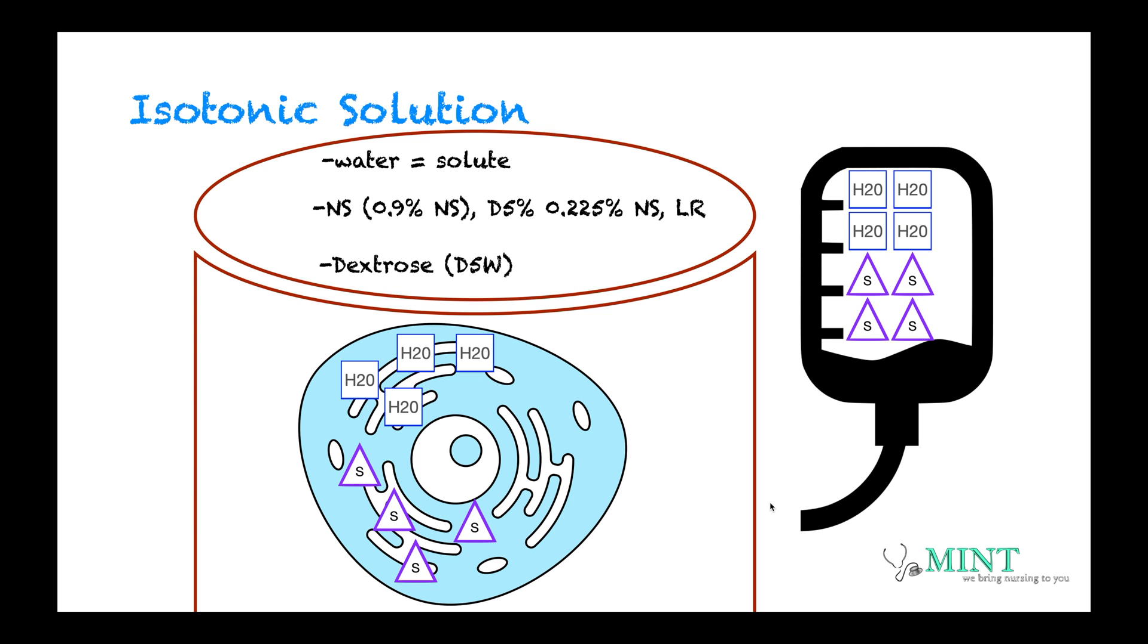So to better understand the different IV fluids, we need to understand what effects it has for our cells. So here we have a cell with homeostasis. This is just a pretend homeostasis. For lecture purposes, we'll pretend that the cell has four waters and four solutes to maintain that homeostasis.